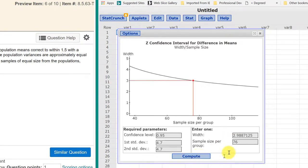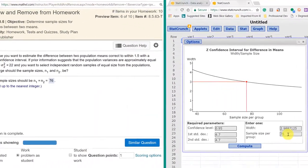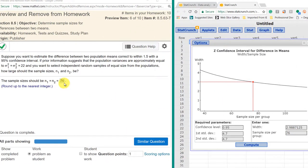And we get sample size per group 76 for both of the groups and that's the sample size they wanted here. Hope this helps.